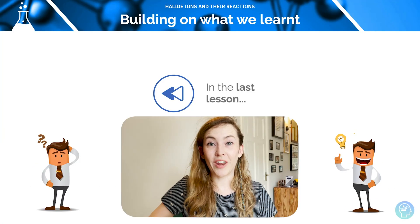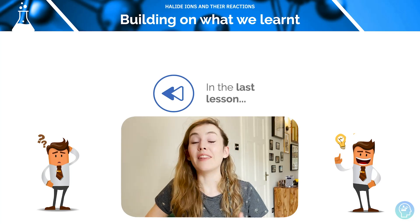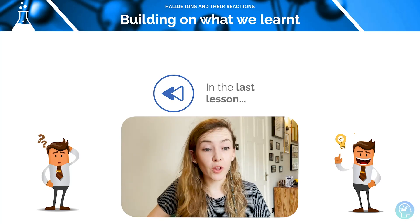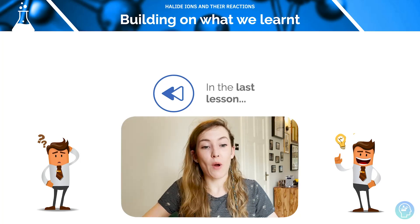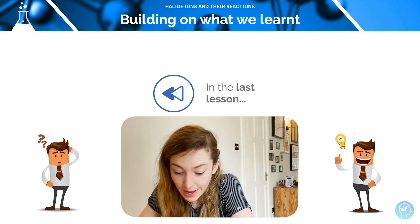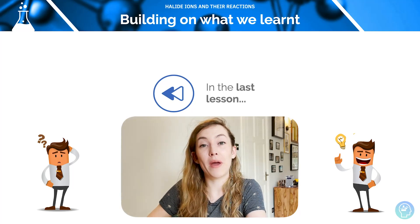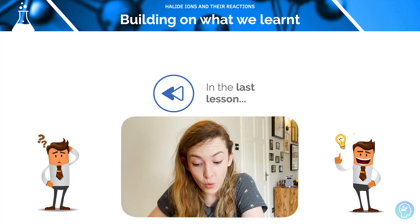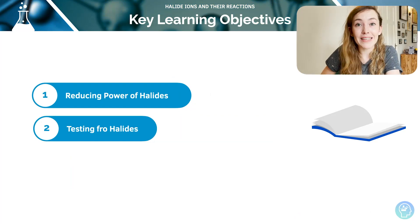Welcome to this tutorial on halide ions and their reactions. In the previous tutorial, we learned about disproportionation reactions — when we react halogens with hot or cold alkalis — and also about the formation of bleach and the chlorination of water. In this session, we're going to look at the reducing power of halide ions and how we test for those ions.